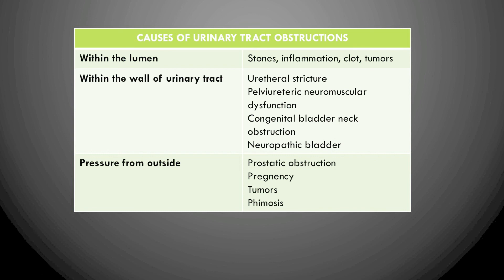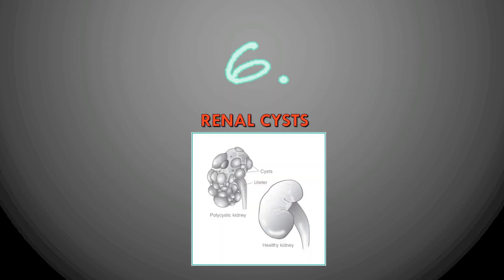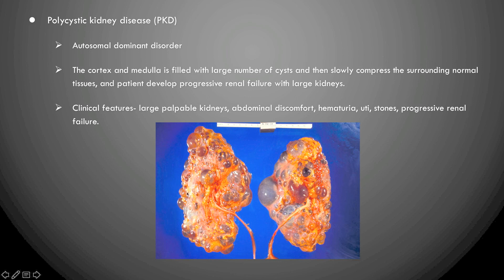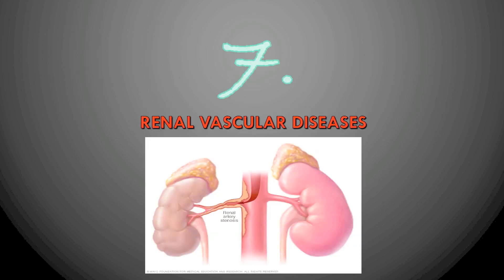Polycystic kidney disease is the most important renal cyst disorder — an autosomal dominant genetic disorder causing multiple cysts in the kidney. The cortex and medulla fill with large numbers of cysts that compress surrounding normal tissue, leading to progressive renal failure. Clinical features include large palpable kidneys, abdominal discomfort, hematuria, increased UTIs, stones, and progressive renal failure.